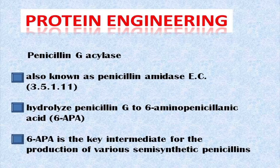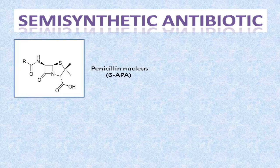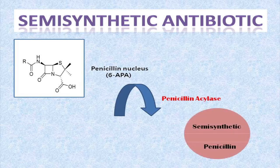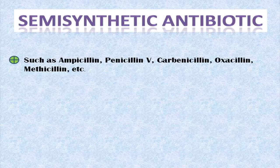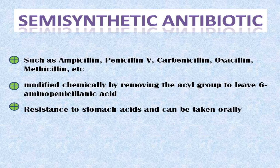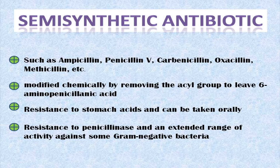6-APA is the key intermediate for the production of various semi-synthetic penicillins. The penicillin nucleus 6-APA undergoes penicillin acylase transformation into semi-synthetic penicillins such as ampicillin, penicillin V, carbenicillin, oxacillin, and meticillin. Modified chemically by removing the side group to leave 6-APA, these variants are resistant to stomach acids and can be taken orally, resistant to penicillinase, and have an extended range of activity against some gram-negative bacteria.